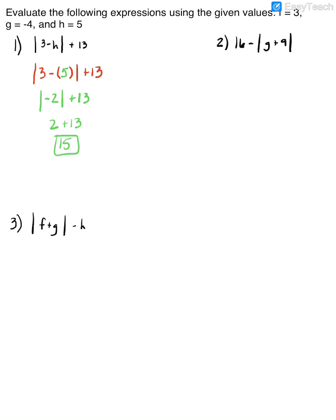The next example is 16 minus the absolute value of g plus 9. I'm going to plug in what g is, which looks like negative 4. So negative 4 plus 9 gives me 5. The absolute value of 5 — the distance from 0 to 5 — is 5. Then 16 minus 5 is 11. Notice I did nothing to the negative sign outside the absolute value; I just found the absolute value of 5. Once it's outside, your expression can be negative — but it's what's inside that changes to positive.